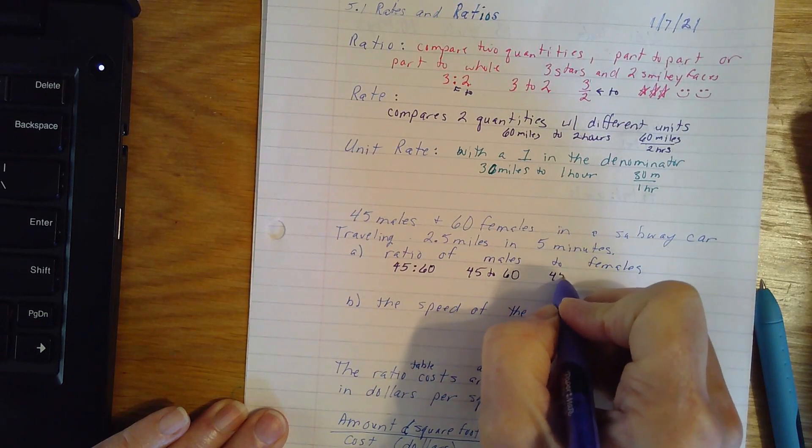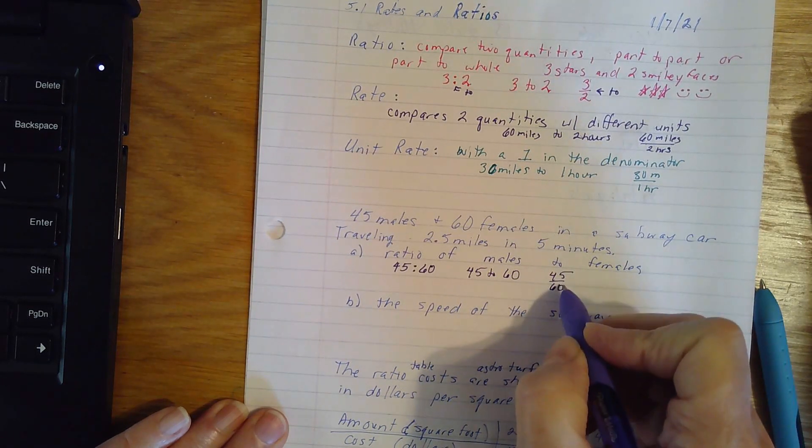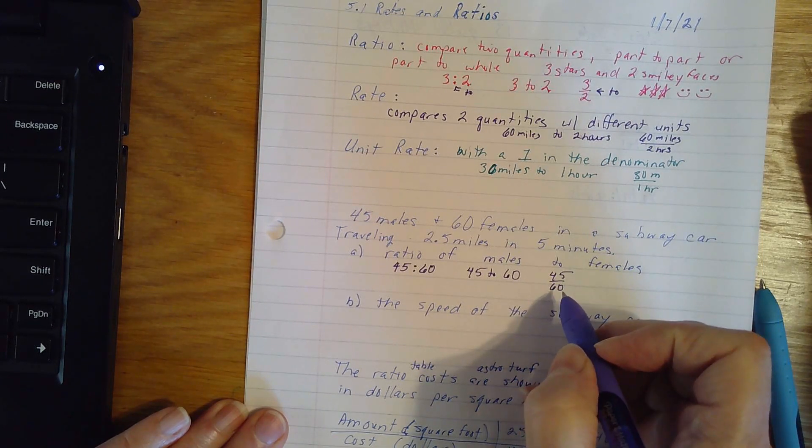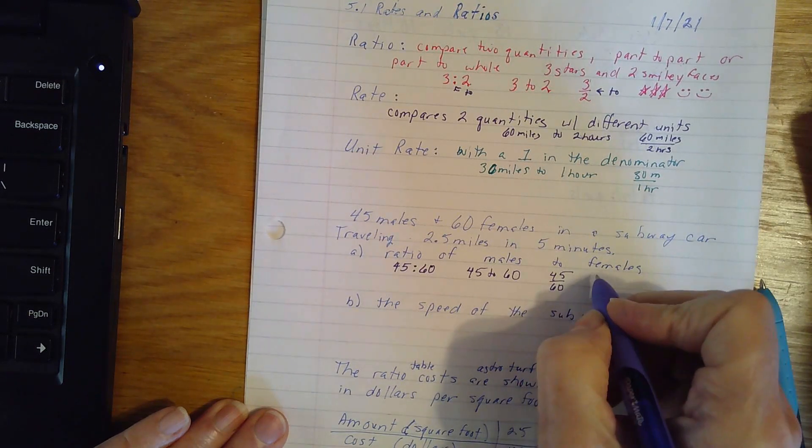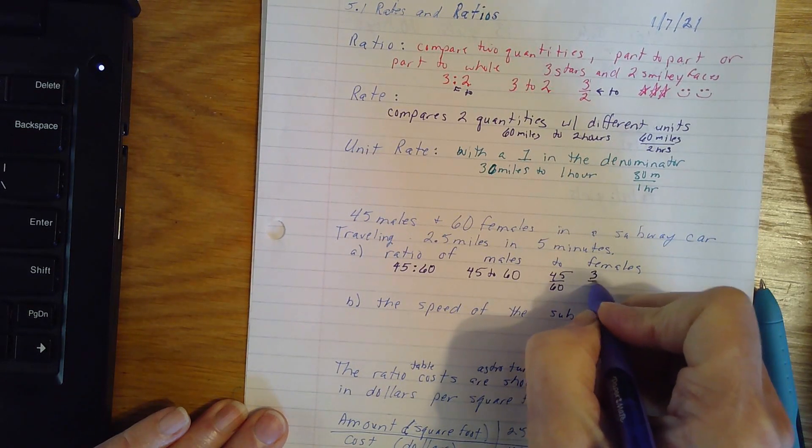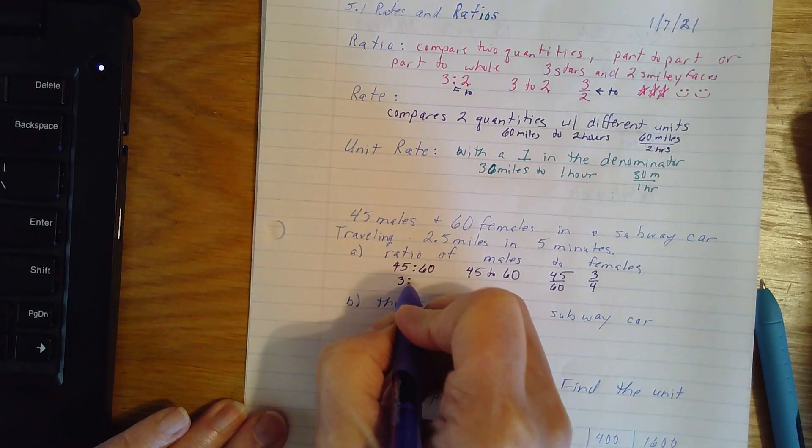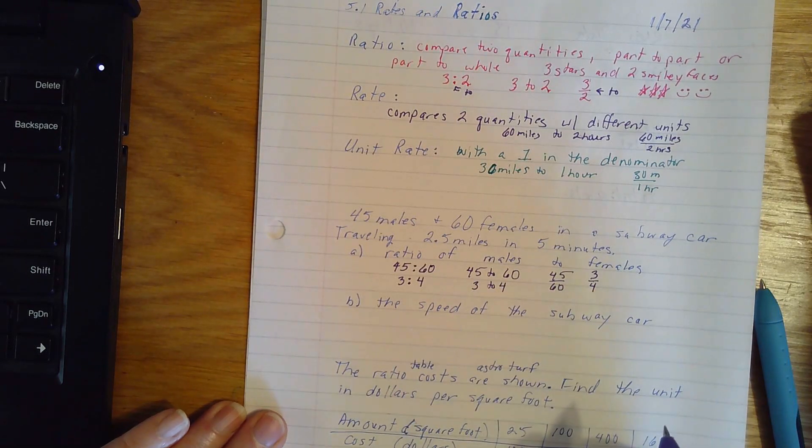It is 45 to 60. This is perhaps the easiest one to see we can reduce. If I divide both the numerator and the denominator by 15, I would get a 3 to 4 ratio. So this could also reduce 3 to 4. 3 to 4.